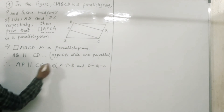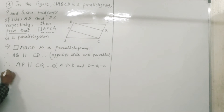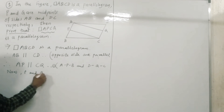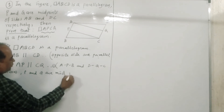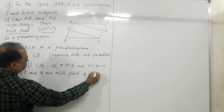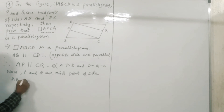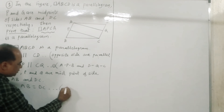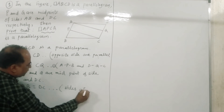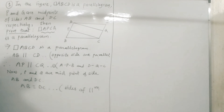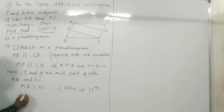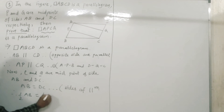This is statement number one: AP is parallel to CQ. Now, P and Q are midpoints of side AB and DC. AB is equal to DC, since AB and DC are equal opposite sides of the parallelogram. Since P and Q are midpoints, multiplying both sides by one-half: one-half AB is equal to one-half DC.